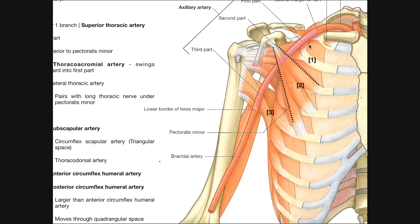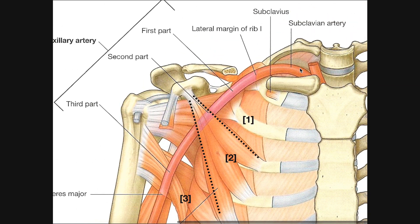Where does the axillary artery begin? Here's the subclavian artery. Here is the clavicle right here — the clavicle has been cut. The subclavian artery is going to pass over the superior aspect of the first rib. The point where the subclavian artery becomes the axillary artery — you can actually see that change in color slightly here — is where the subclavian artery has completed its passage over the lateral superior margin of the first rib.